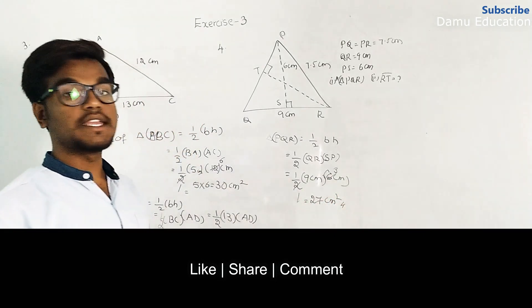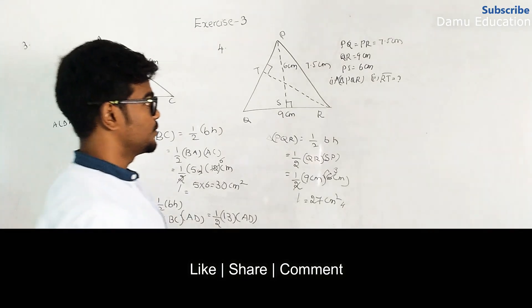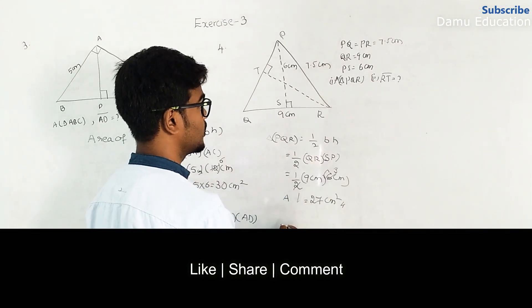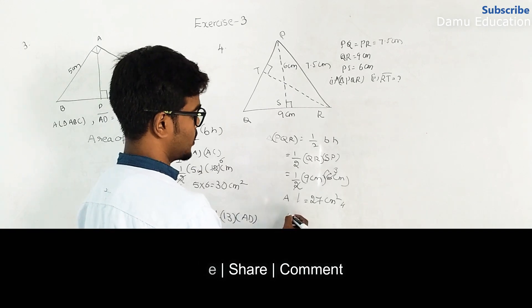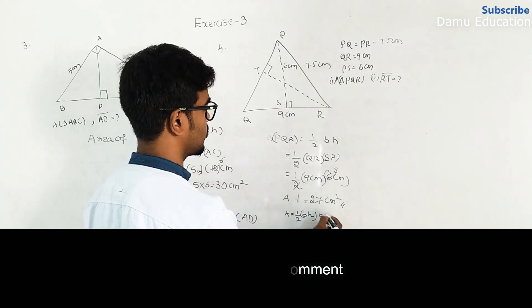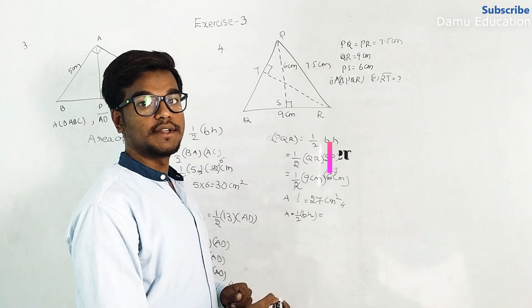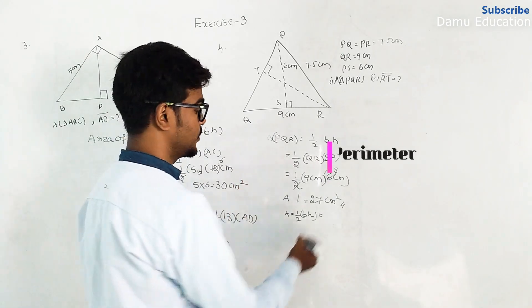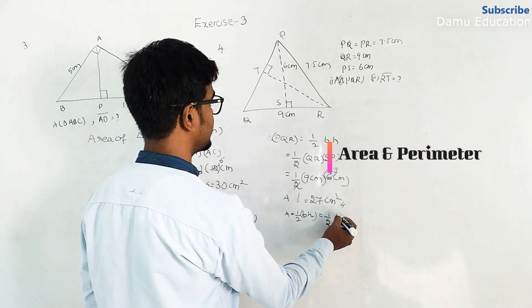So area is 27 cm squared. Then next one—again area is half into base into height. We have to take this in order to find the TR. What is the height, the perpendicular height? So half into base is PQ then TR.